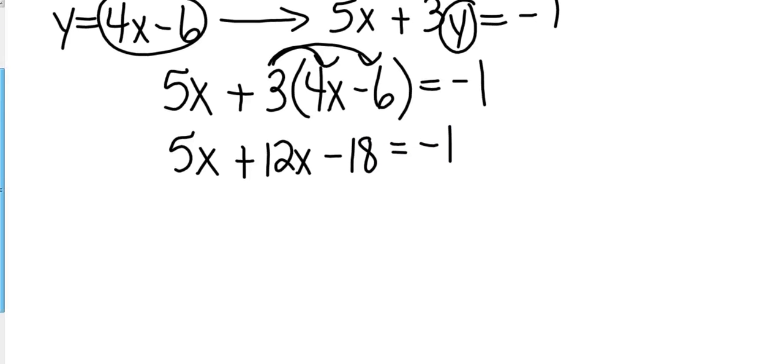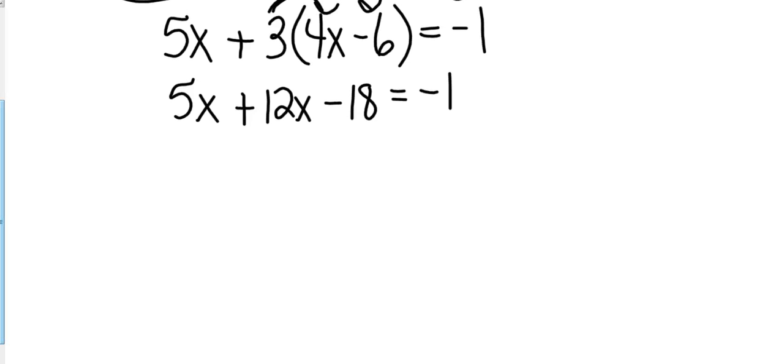Scroll this down a little bit. Put those x's together: 5x and 12x is 17x minus 18 equals negative 1. And then how do I get rid of that minus 18? I'm going to add 18 to both sides.